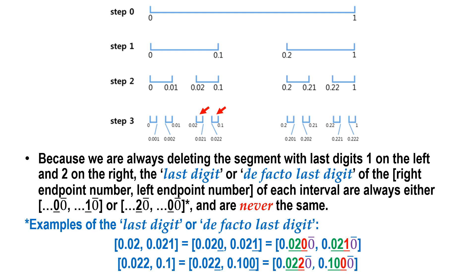It is to be noted that n, the length of the digit, is 3 here in step 3 as underlined, and is very long in the Cantor set. Someone may bring up a particular number — I will discuss it later because it will show a very interesting delusion in current mathematics.